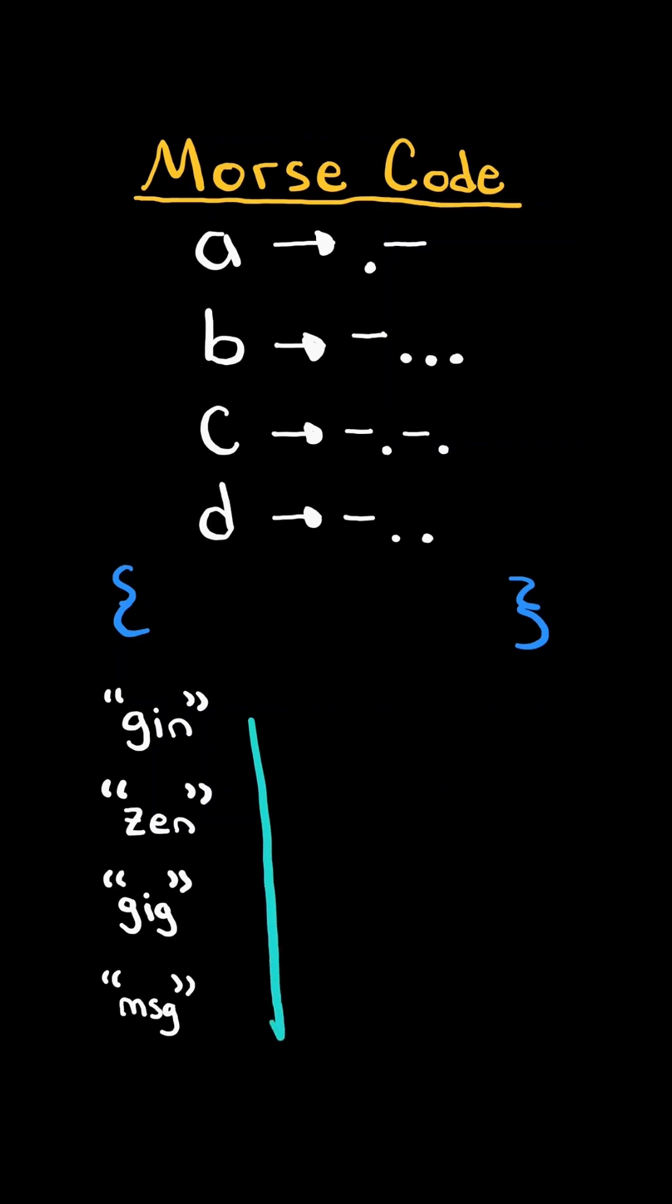We will then iterate through the list of words and for each word we will initialize an empty string to build its Morse code transformation.